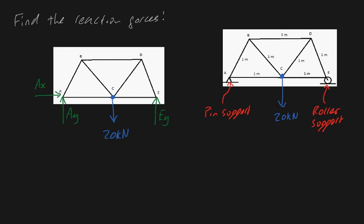Now we just need to create an axis so we can define what we mean by positive and negative. I'm going to define positive to the right as our x-direction, and I'm going to define upward as being positive y. Now we're ready to get into the maths.